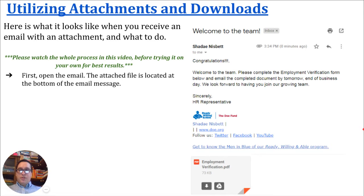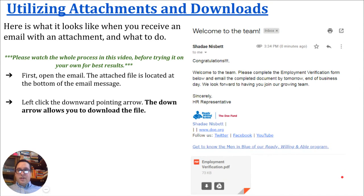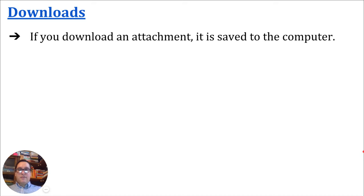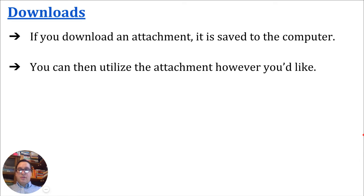The first thing you would do is open up the email. The attached file is going to be located at the bottom of the message, right down here. You're going to left-click the downward-pointing arrow — the down arrow for download. When you get attachments, you'll see there are two choices when you hover your mouse above the file. One is the arrow, which you would use to download. The other is a triangle emblem, which lets you save files to your Google Drive — something we'll discuss more later. For today, we're going to talk about downloading. So you click the arrow to download the attachment. Downloading means it's saved to your computer — to the physical device you're using — not to Google Drive. Then you can utilize the attachment however you'd like.